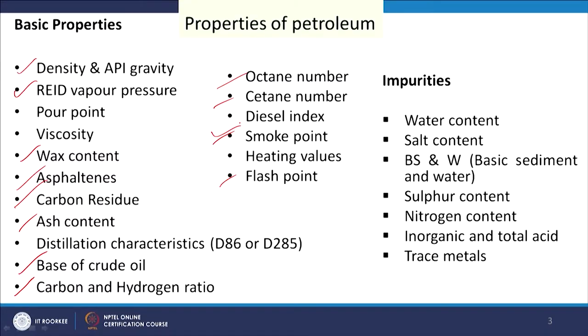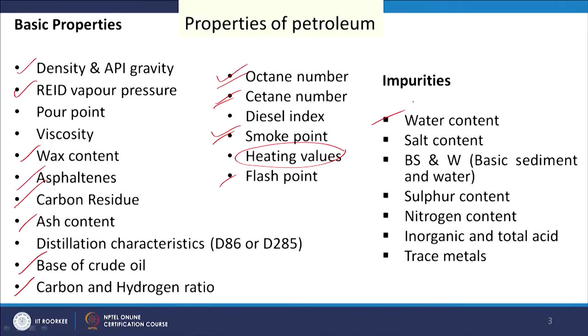For example, smoke point is used for kerosene, octane number is used for gasoline, and cetane number is used for diesel. Overall heating value is very important as we are dealing with energy from the feedstock. Different impurities are also present: water content, salt content, basic sediment and water, sulphur, nitrogen, inorganic acid, and trace metals.